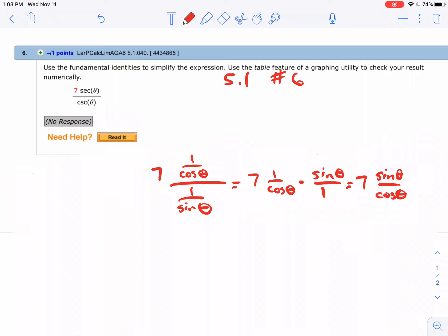And if you go to that sheet, again, that has all the information in it, sine over cosine is simply tangent. So you'd want to type in 7 tangent of theta.